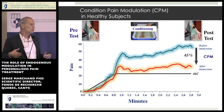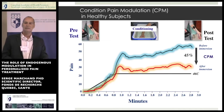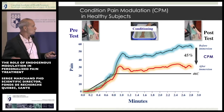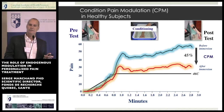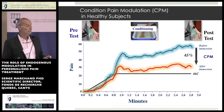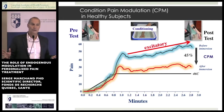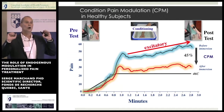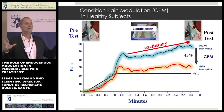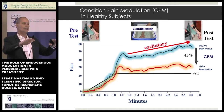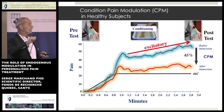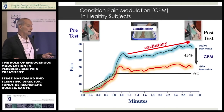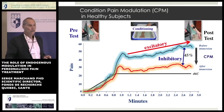We do brain scans, we do electrophysiology, we measure the autonomic nervous system. But concentrating on perception, you can see that we can measure both the excitatory system and the inhibitory system. This excitatory measure — the increase of pain perception over time — varies. If you were a research group, next time I will bring my thermode and water bath and we will test you all, showing there is a huge difference between individuals, even if you're not in chronic pain.